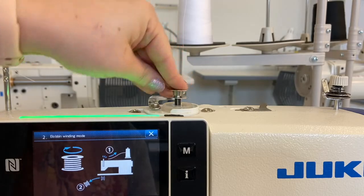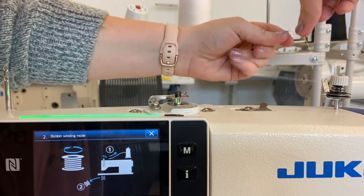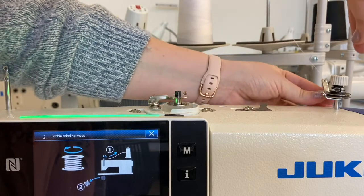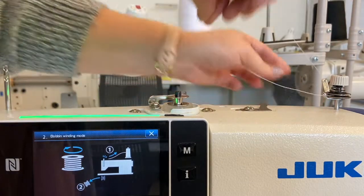To wind the bobbin, load it on the bobbin winder atop the machine, sliding it securely onto the winding post. Bring the thread down from the cone stand, through the tension plates and thread guide, and then wrap around the bobbin.